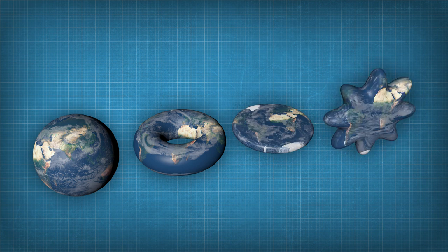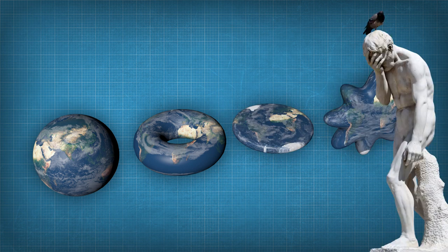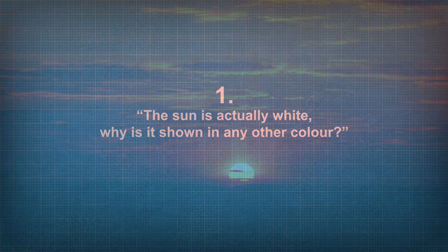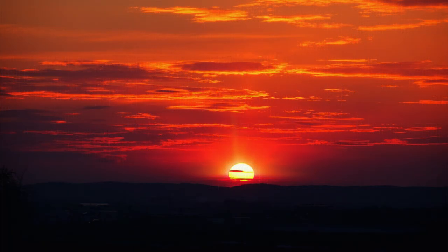Anyway, while sometimes there's no way of having a rational discussion, there are some having a specific good question. So here are the most frequent ones answered. The Sun is actually white. Why is it shown in any other color? While the Sun can look yellow or red due to our atmosphere, it is indeed white.